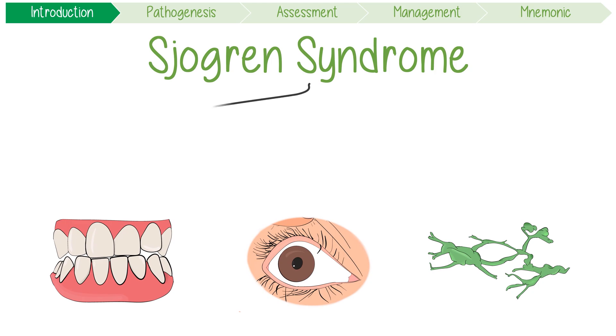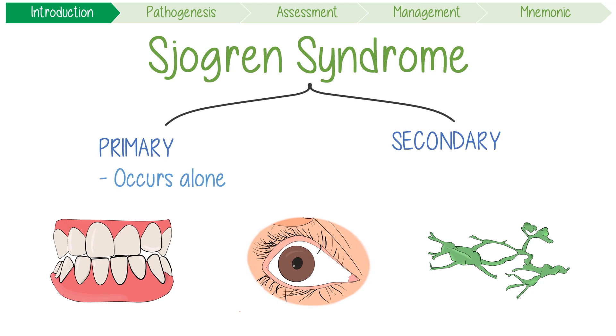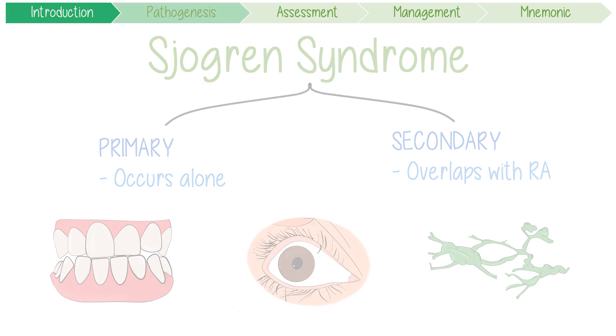To classify the disease, think of it as either primary, where it occurs alone, or secondary if it overlaps with rheumatoid arthritis or other autoimmune diseases.